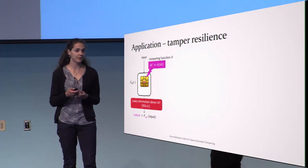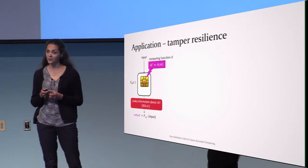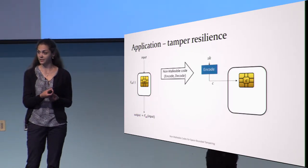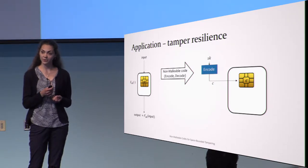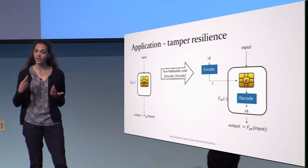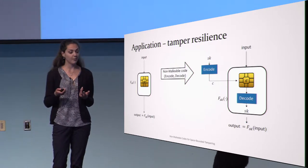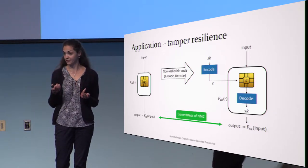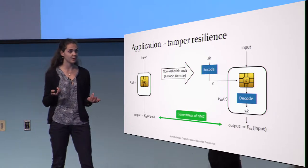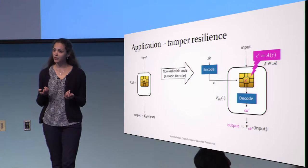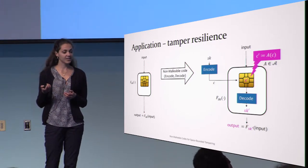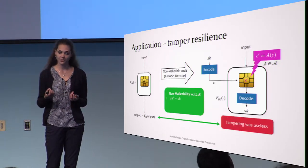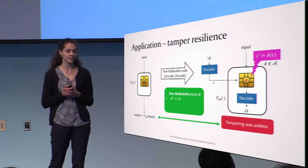We need to protect against memory tampering, and one way to protect any cryptographic functionality is via non-malleable codes. Instead of storing the secret key in the memory, we store an encoding of the secret key. To run the functionality we first run decode, and by correctness of the non-malleable code the input-output behavior didn't change. If someone tampers with the memory, by definition of non-malleable codes there are three options. Either C' decodes to the original secret key, in which case the tampering was useless and the adversary didn't learn anything.